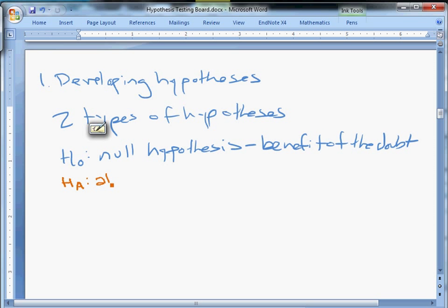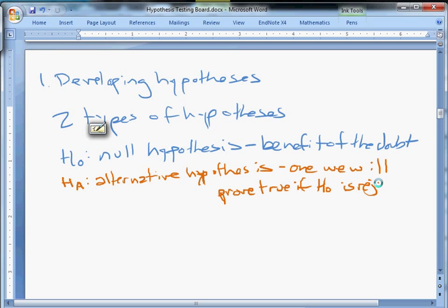We also have an alternative hypothesis, and this is oftentimes the more exciting one. This is the one we will prove true if H0 is rejected. So one way to think about this is that we're going to assume that the null is true. We're going to assume H0 is true, which means we can never prove it true. You can't prove something true if you're assuming it's true. So if you're trying to prove something true, that should always be your alternative.